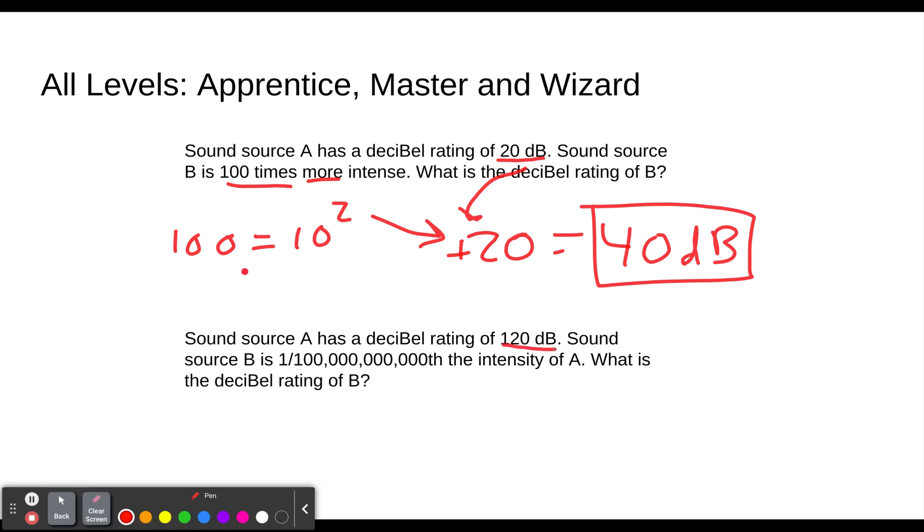All right, so we have a decibel rating of 120 decibels. That's like 10 to the 12th, so to speak. Sound source B is one ten billionth, one one hundred billionth, smaller than the intensity of A. What is the decibel rating of B?